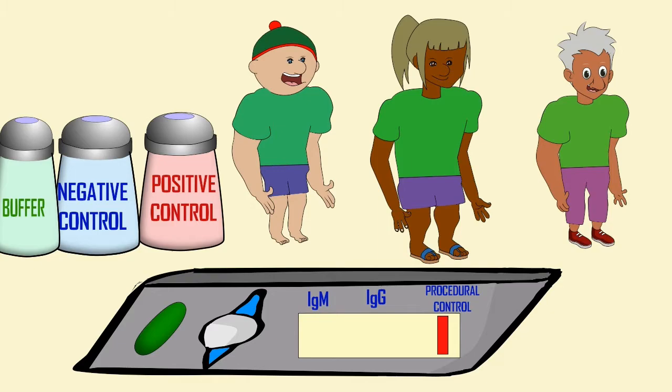If all of our controls suggest that our procedure is running properly, we could then test patient number one using either a blood sample, say from a finger stick, or serum from a blood sample which was previously drawn.